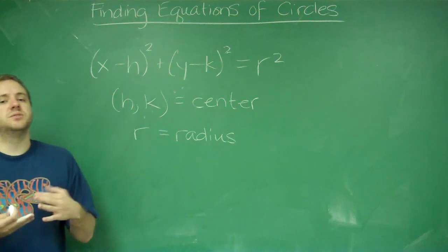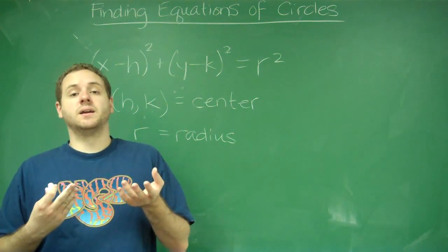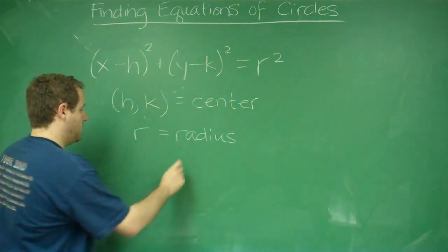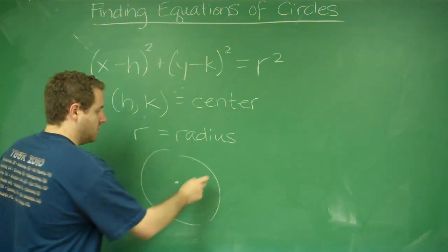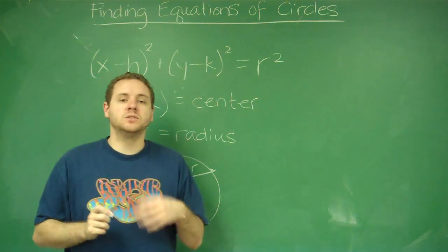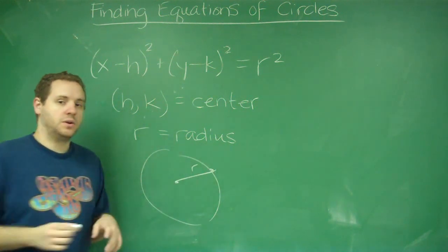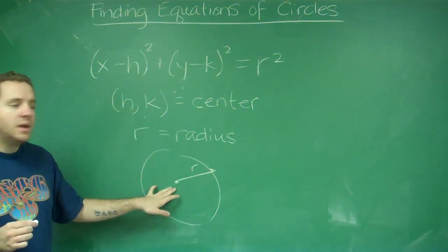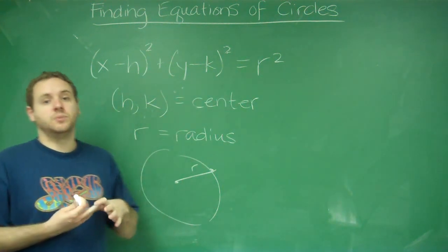You're not always going to be given the center and the radius, though. Sometimes you're given two coordinate points, like the center and some other point on the circle. Remember that the distance between the center and any other point on the circle is always going to be the radius. So if you're given this as a coordinate point and this as a coordinate point, you certainly know h and k because you were given this point. You could figure out r by doing the distance formula between those two points.